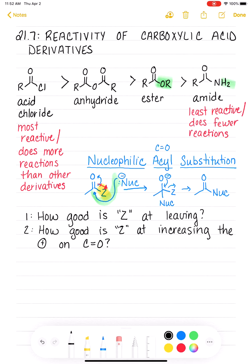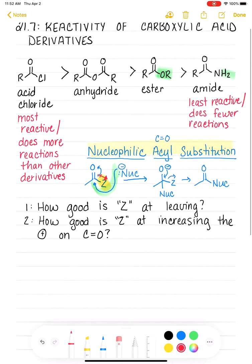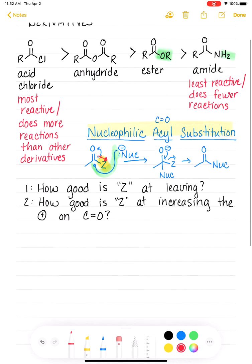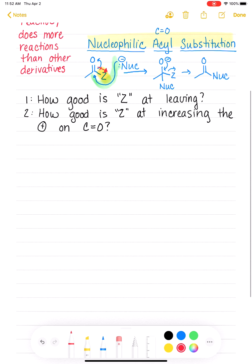So what we're going to do now is go back to this generic nucleophilic acyl substitution mechanism. That is a super generic version of this reaction. What I'm going to do is give you a slightly more detailed, but still generic nucleophilic acyl substitution reaction.